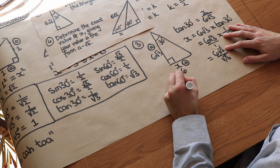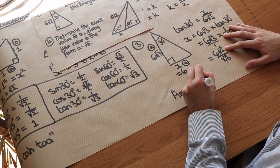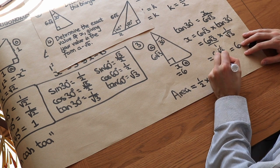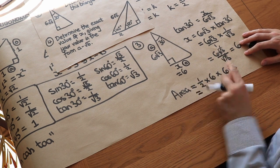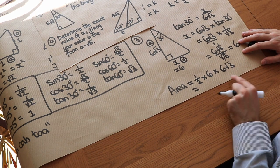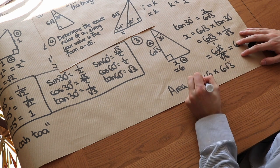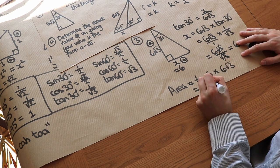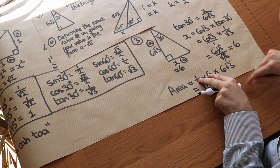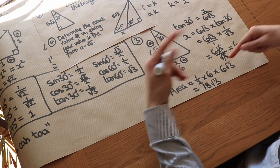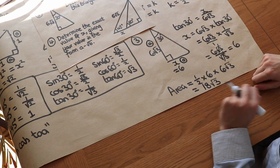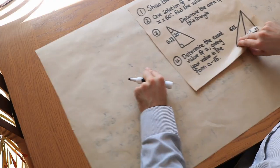Now we can find the area: area = 1/2 × base × height = 1/2 × 6 × 6√3. Half of 6 is 3, and 3 × 6√3 = 18√3. So the area is 18√3.